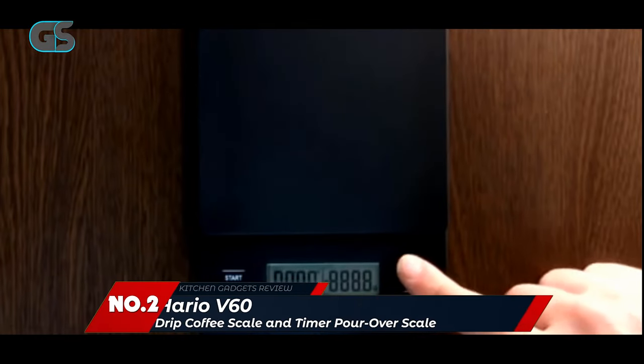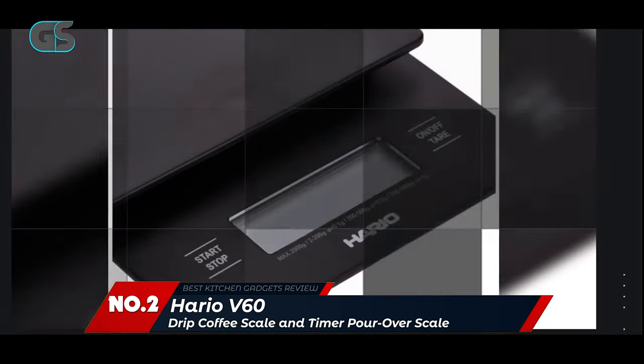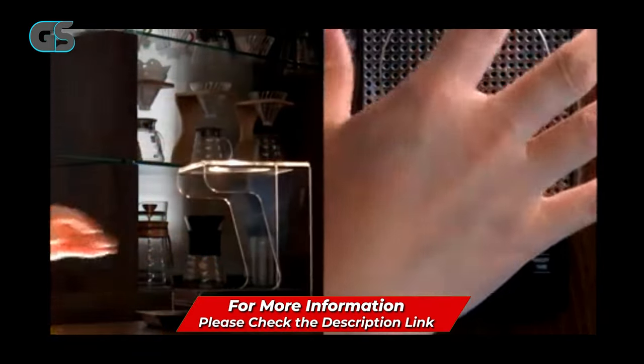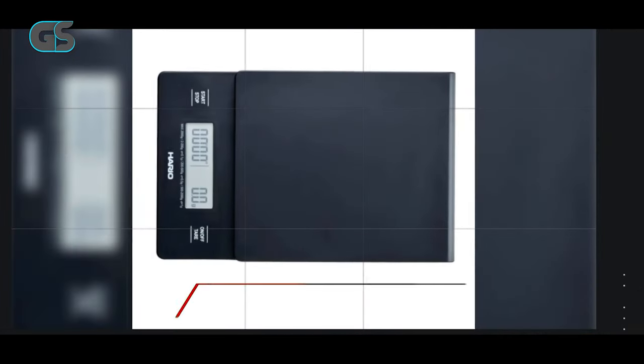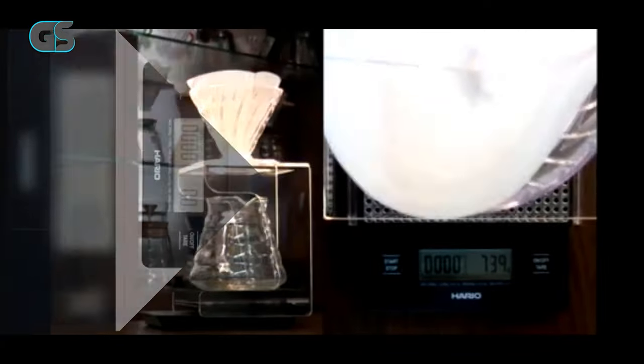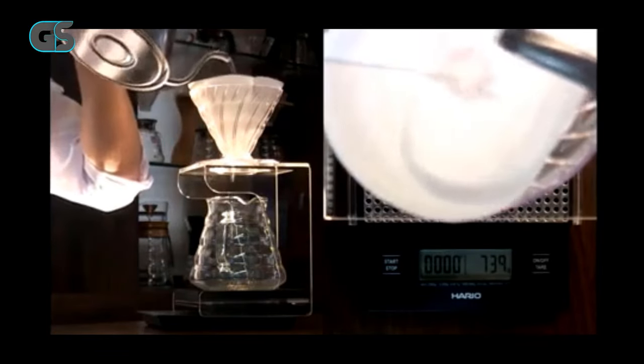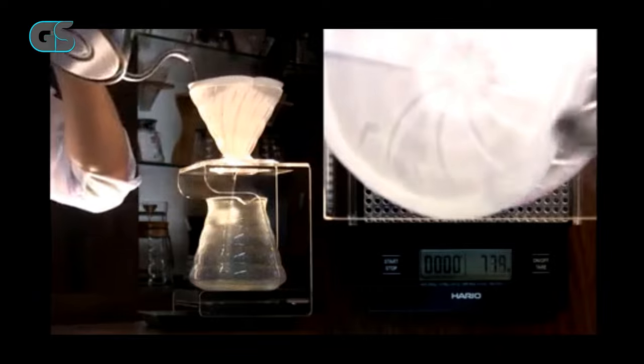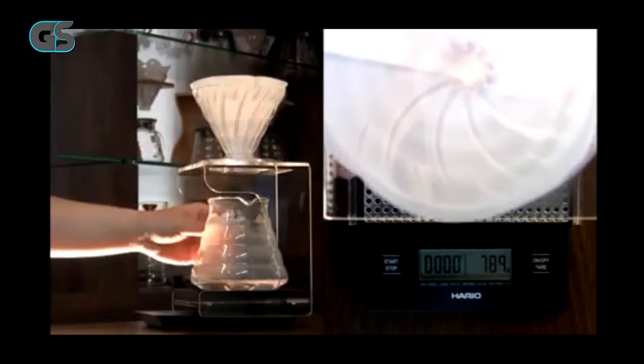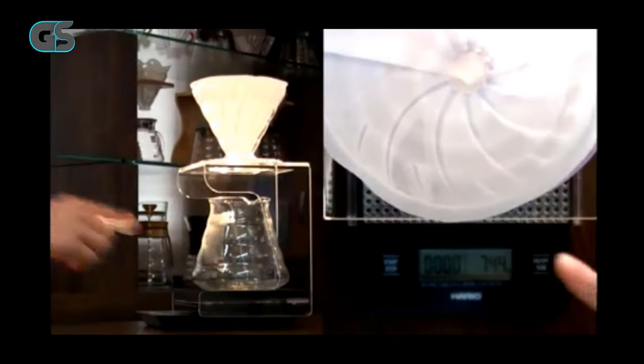Number 2. Herio V60 Drip Coffee Scale & Timer Pour Over Scale. The Herio V60 Drip Coffee Scale & Timer is a game-changer for coffee lovers seeking the perfect pour over experience. This exceptional coffee scale and timer combo elevates the art of brewing by combining precision, functionality, and aesthetic appeal. Right off the bat, the sleek and minimalist design of the Herio V60 Drip Coffee Scale catches the eye. Its compact size doesn't compromise its capabilities. The integrated timer adds a level of convenience that every amateur or professional barista can appreciate. The backlit digital display is easy to read, even in low-light conditions, making your brewing process a breeze.